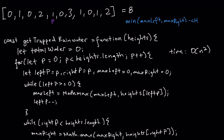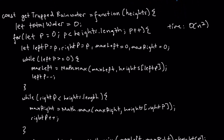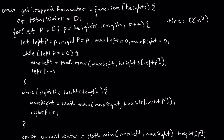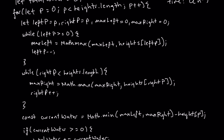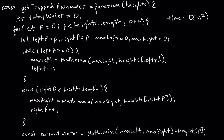What about space complexity? Looking at all the values we're storing: total water is static, not scaling. Left pointer, right pointer, max left, max right — these are all non-scaling, storing only one value at a time that doesn't grow even as input grows. Current water is a single calculation, and total water is not an array or object — nothing is growing. All of these are O(1), so our space complexity is O(1).